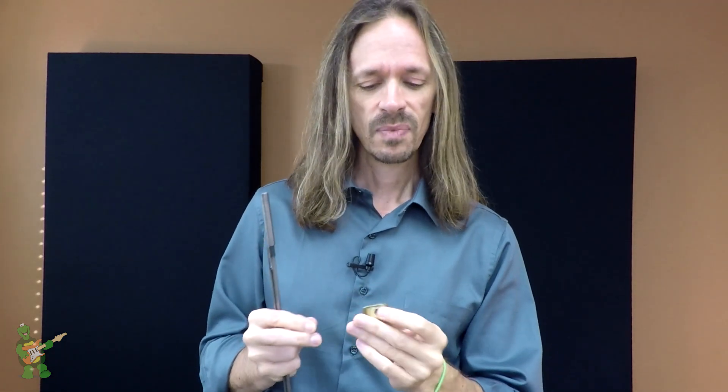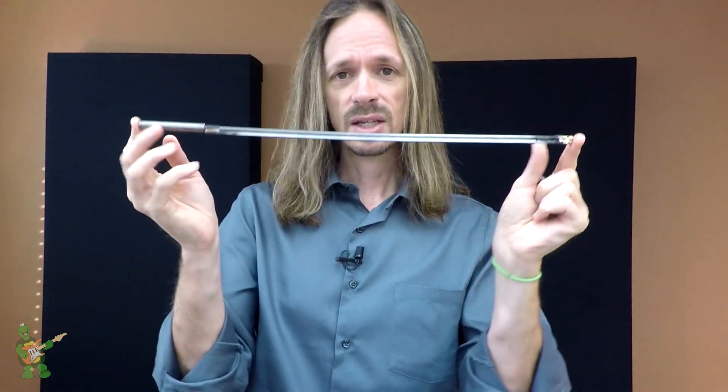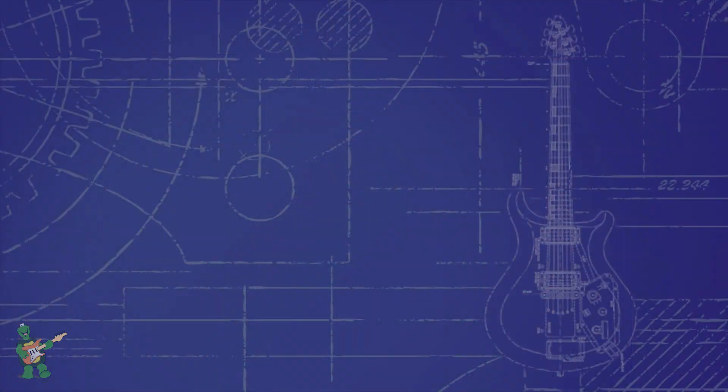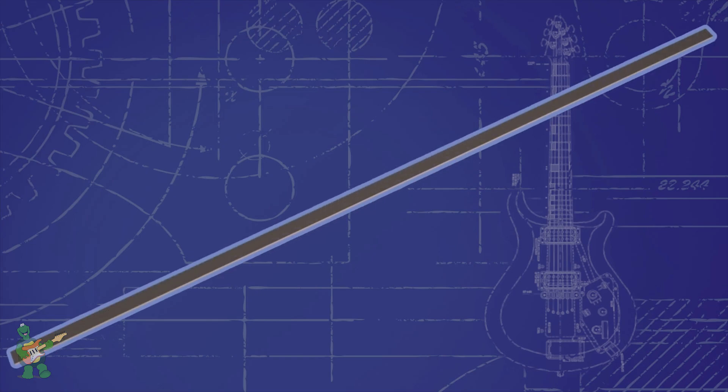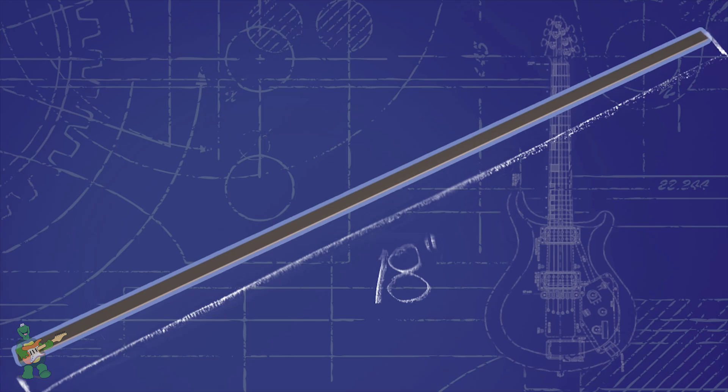Before we can understand how this works, we need to understand how a double truss rod works. First, imagine a thin flat metal bar about 18 inches long. When this bar is at rest, it sits in a straight line, which is exactly how it will sit inside of a guitar neck.